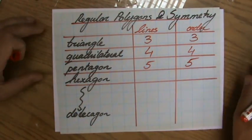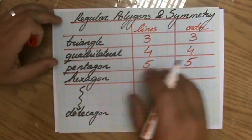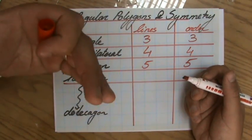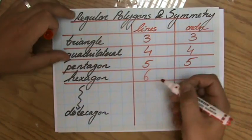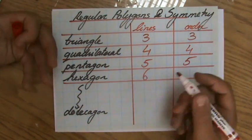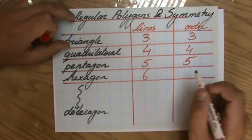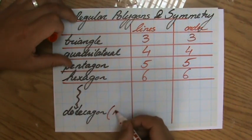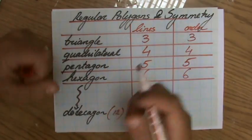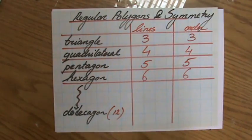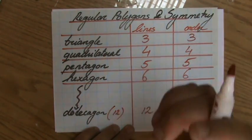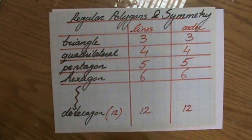So actually, I don't think I have to do the hexagon, which is a regular hexagon, a regular six-sided figure. How many lines of symmetry will that regular hexagon have? Six. And what is the order of rotational symmetry of a regular hexagon? Six. Yeah, so a dodecagon, which is a 12-sided figure, a regular dodecagon. How many lines of symmetry? Twelve. What is the order of rotational symmetry of a regular dodecagon? Also twelve. Fantastic.